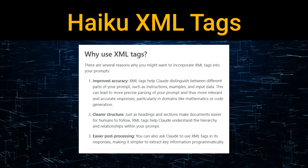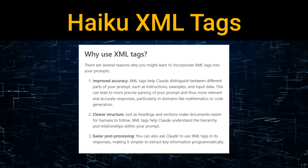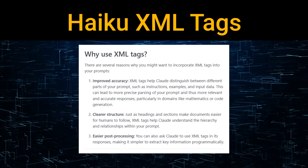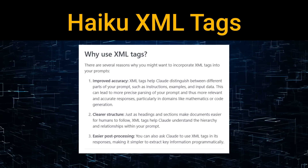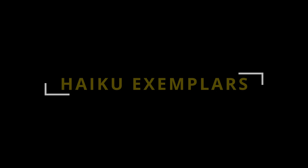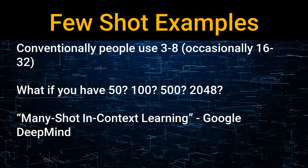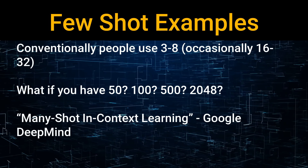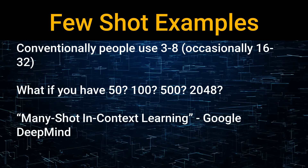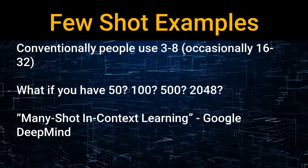Haiku's got some other interesting things — you should be using XML tags with it. It seems to respond a lot better to XML tags than to JSON for putting things in and out. One of the biggest advantages of smaller proprietary models is that you can add more in-context learning — you can add more few-shot examples. Where in the past people would go for three-shot or five-shot, maybe eight-shot, now it's not a big deal to go for 20, 30, 50 different examples.